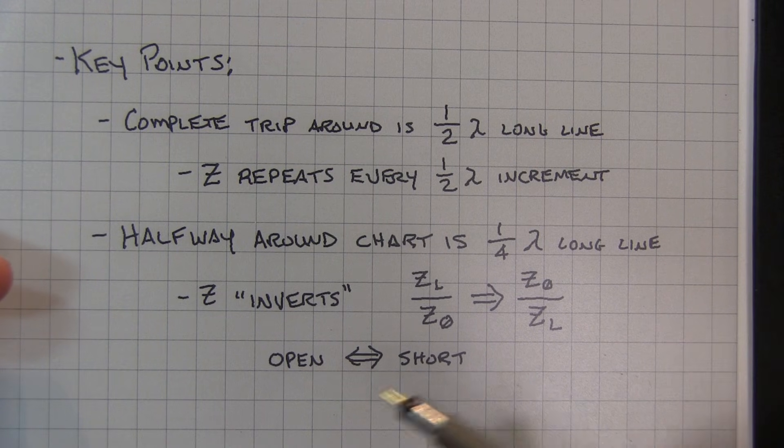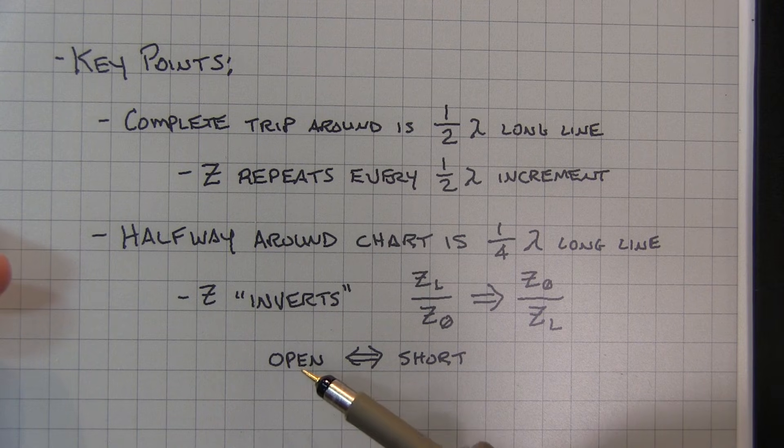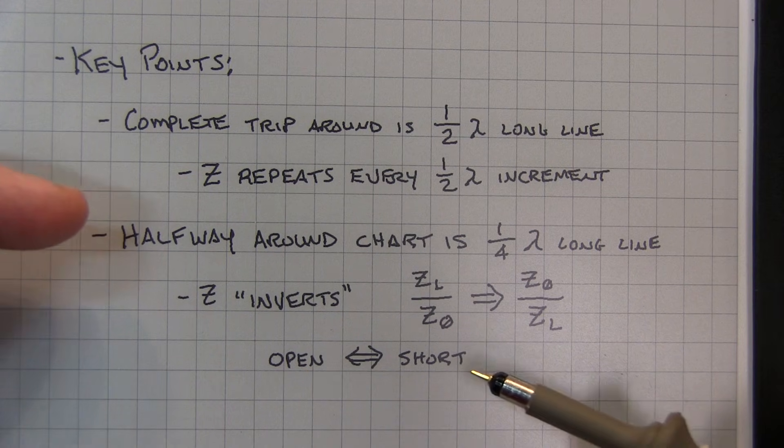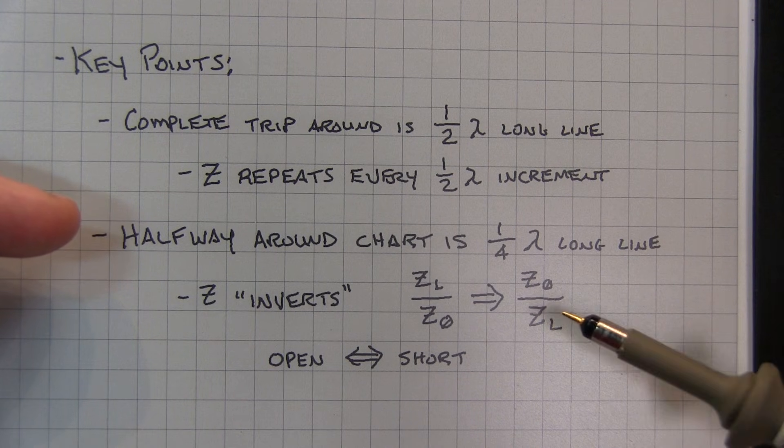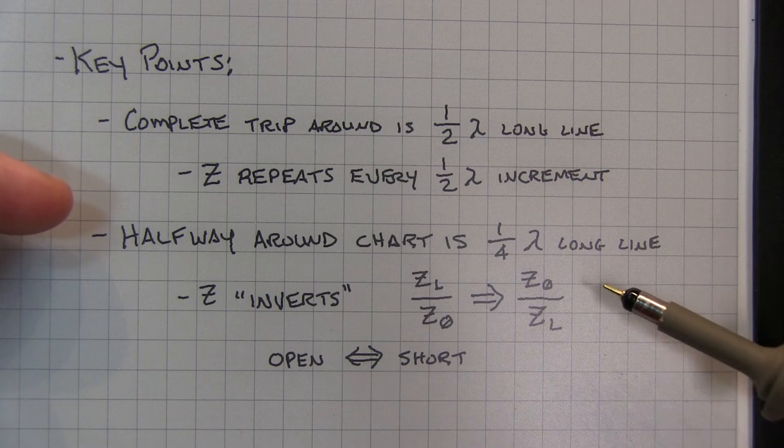In the extreme case, if the transmission line is left open at one end, and that line is a quarter-wavelength long, it'll look like a short circuit at the other end at that particular frequency, and vice versa. If you have a short in the line and you go a quarter-wavelength away, that will actually look like an open.